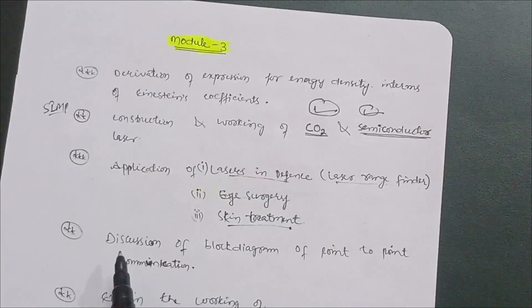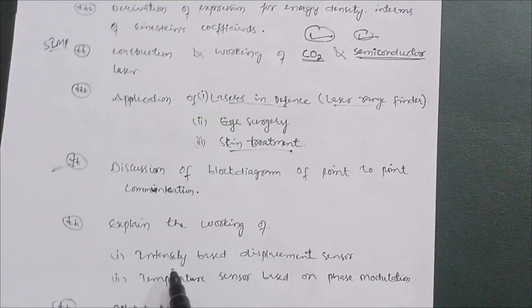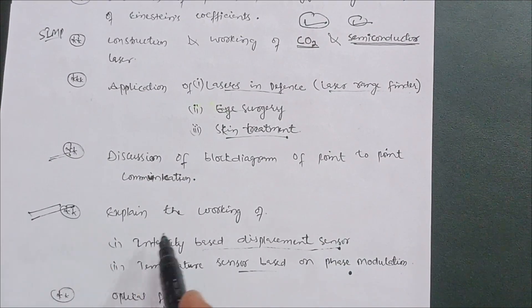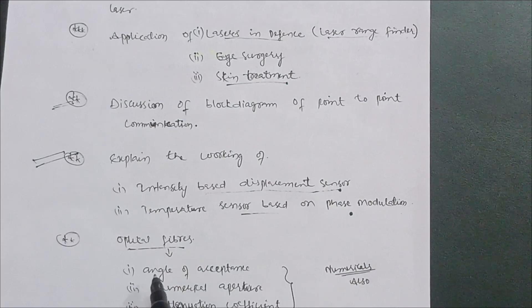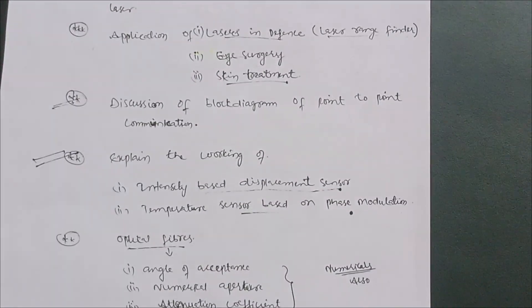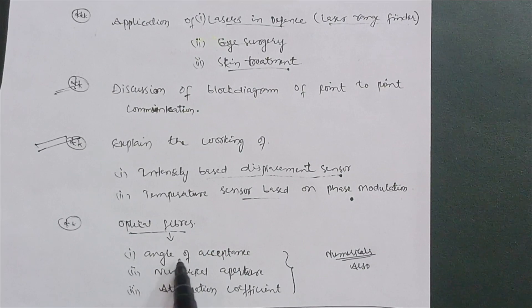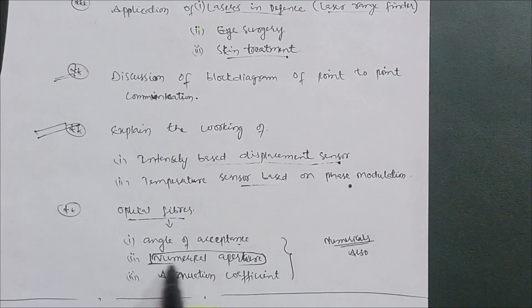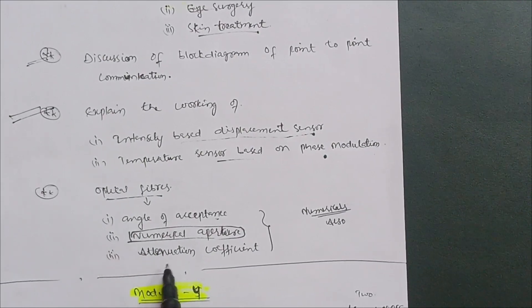Also from Module 3: discuss the block diagram of point-to-point optical fiber communication. Explain the working of an intensity-based displacement sensor and a temperature sensor based on phase modulation. For optical fibers, focus on key terminologies such as angle of acceptance, numerical aperture, and attenuation coefficient. The derivation of numerical aperture is also important. If you attempt fiber optics numericals, they typically ask you to find angle of acceptance, numerical aperture, or attenuation coefficient.